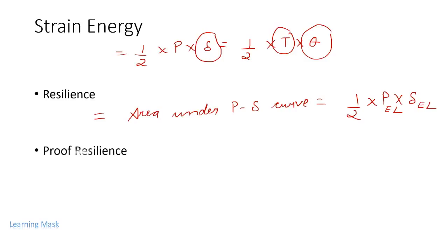Proof resilience is the maximum energy absorbing capacity of a material in the elastic region. The key distinction is: resilience refers to energy absorbing capacity in the elastic region, while proof resilience refers to the maximum energy absorbing capacity in the elastic region.